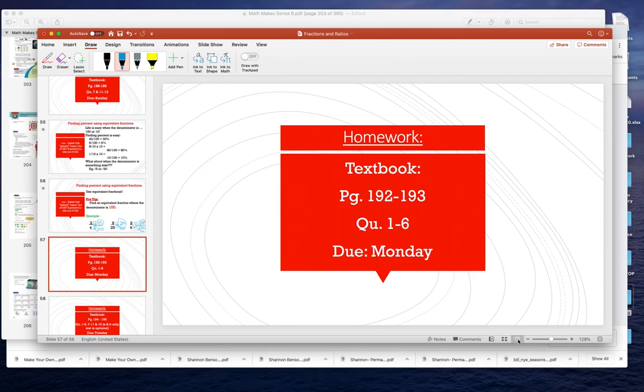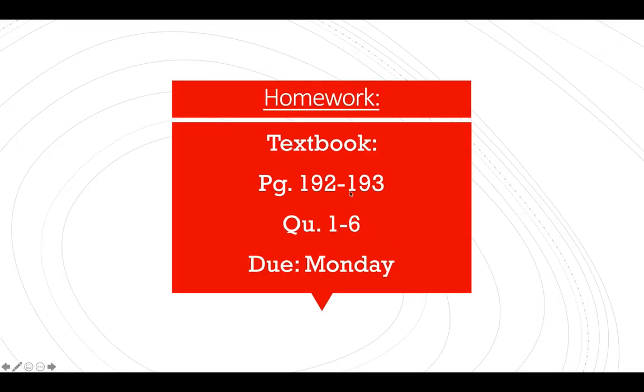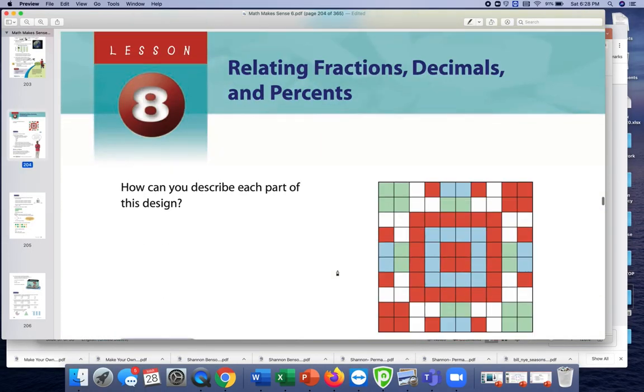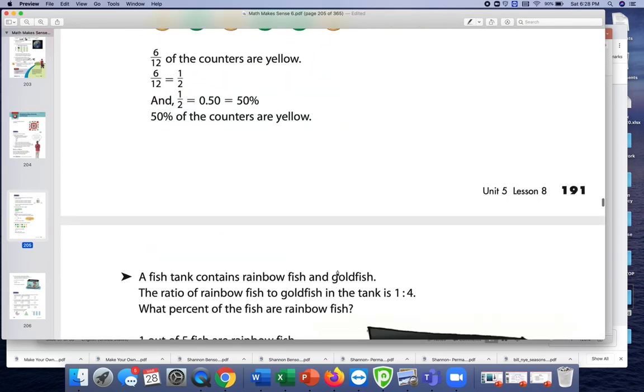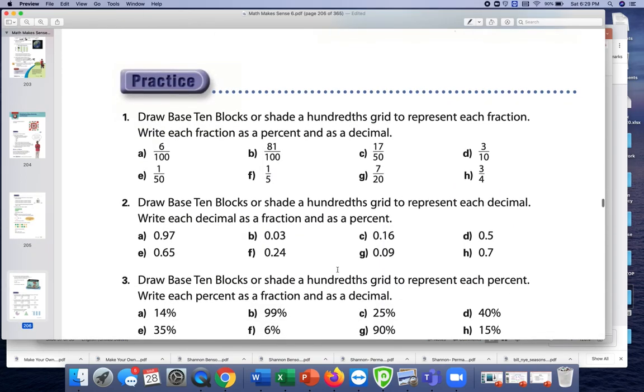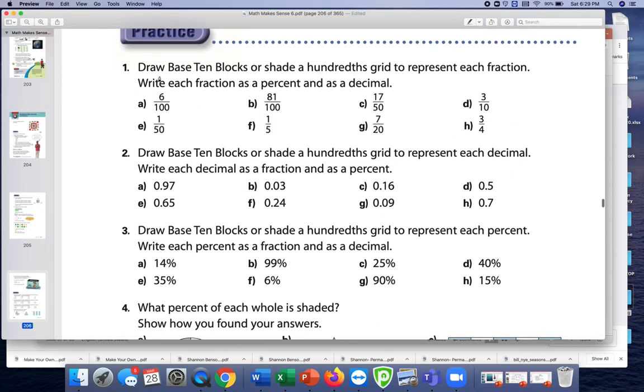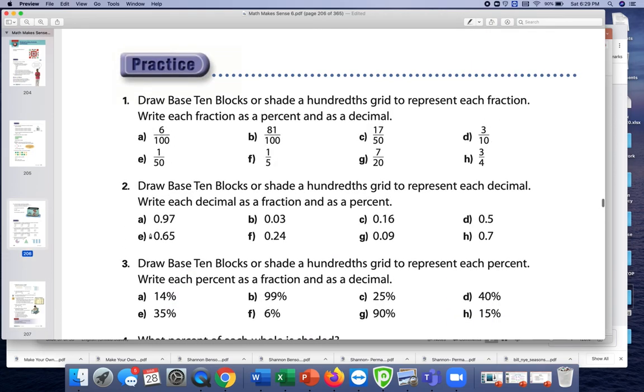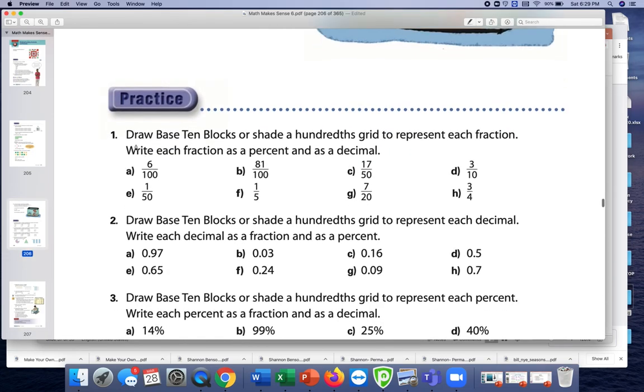So your homework is page 192, 193 questions 1, 2, 3, 4, and then 5 and 6. A couple of things for this. You do not need to do this part where you have to shade the hundred grid. If you want to, that was cool. If you want to, you can.